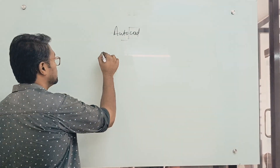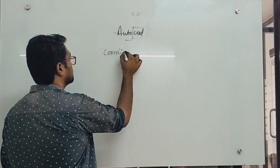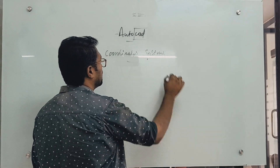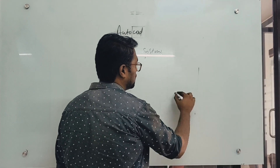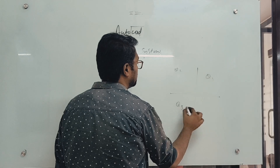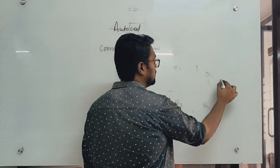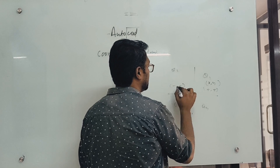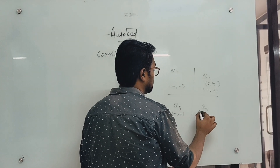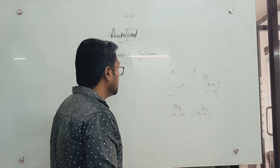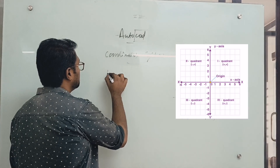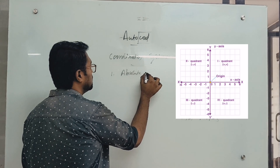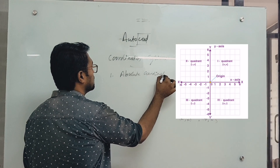Next topic is the 4 unit systems. I think you are familiar with Q1, Q2, Q3, and Q4 quadrants — where the x and y coordinates will be plus/plus, minus/minus, minus/plus, and plus/minus respectively. In AutoCAD software, the first field is the absolute coordinate system.